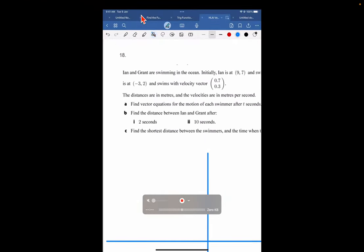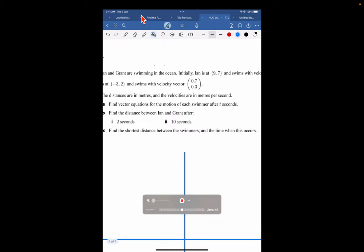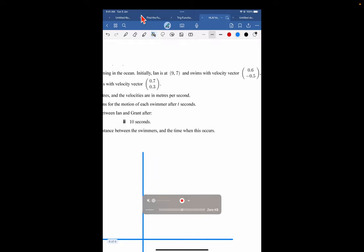Okay, so a nice tasty vectors question. Ian and Grant are swimming in the ocean. It tells us some coordinate locations, velocity vectors, right?